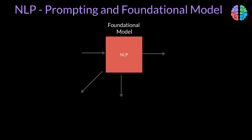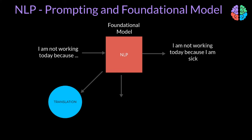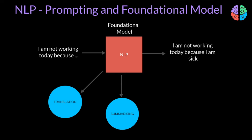If we take a field like natural language processing, something called foundational models exist. These models are trained for sequence prediction, where the models can predict the next word in a sentence. These foundation models can be easily used for any other NLP task like translation or text summarization using what is called zero-shot transfer learning. The most well-known way to achieve zero-shot transfer learning for a specific task is by prompting, which we have been using with ChatGPT.